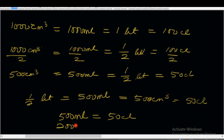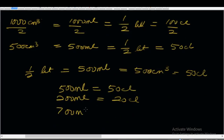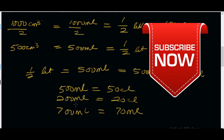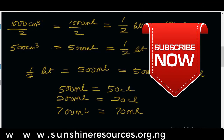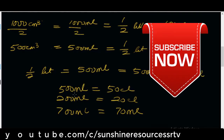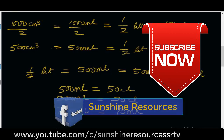It is also right to say 200 ml is equal to 20 cubic liters, and 700 ml is equal to 70 cubic liters. You can get measuring devices like beakers, conical flasks, and measuring cylinders to get this measurement right. We've come to the end of this lesson — thank you very much for watching and God bless you. If you like this video, give us a thumbs up and subscribe to our YouTube channel. You can visit our website at www.sonshireresources.org.ng.